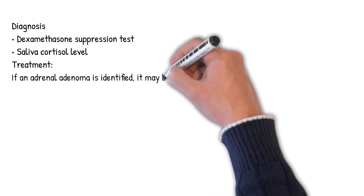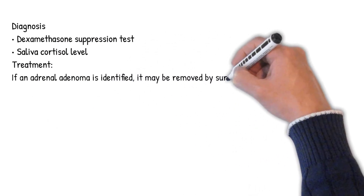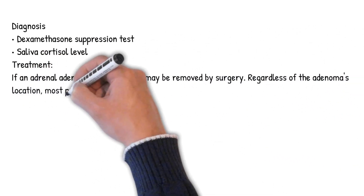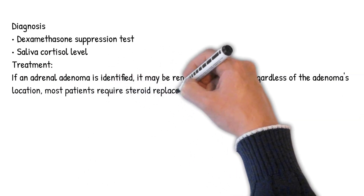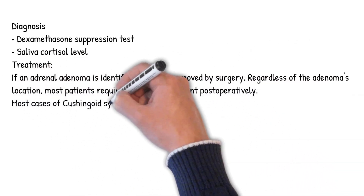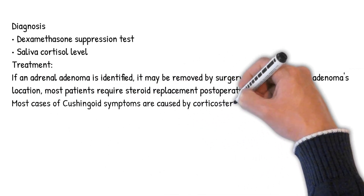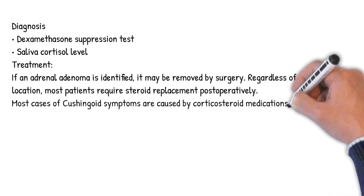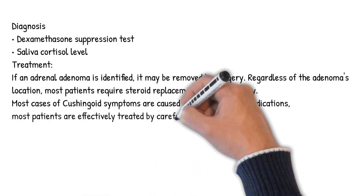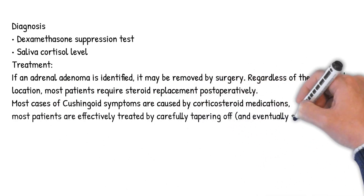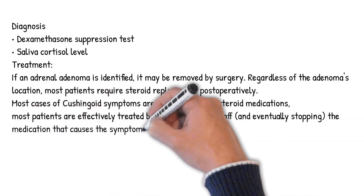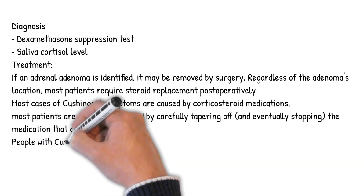Treatment: If an adrenal adenoma is identified, it may be removed by surgery. Regardless of the adenoma's location, most patients require steroid replacement postoperatively. Most cases of Cushing's symptoms are caused by corticosteroid medications, and most patients are effectively treated by carefully tapering off and eventually stopping the medication that causes the symptoms.